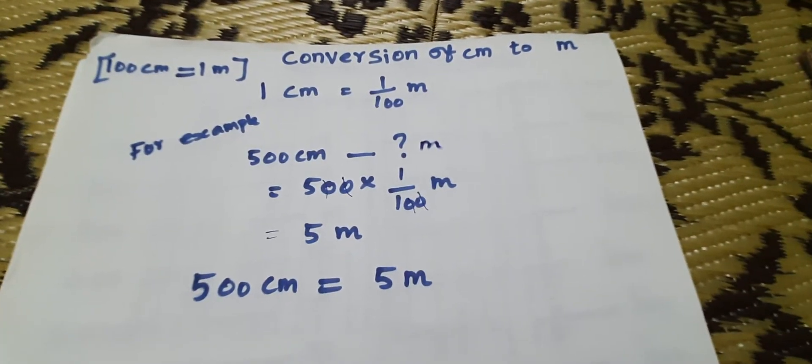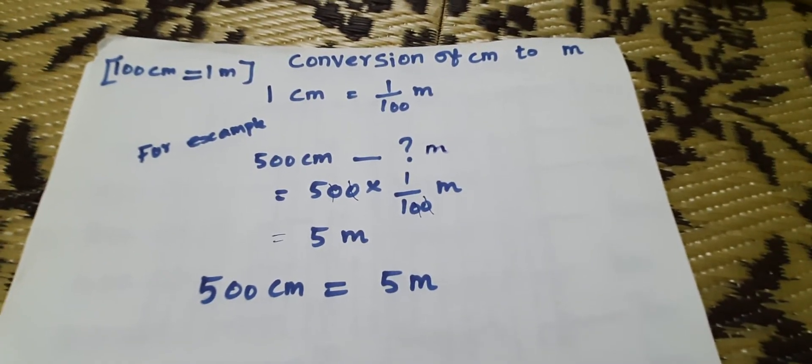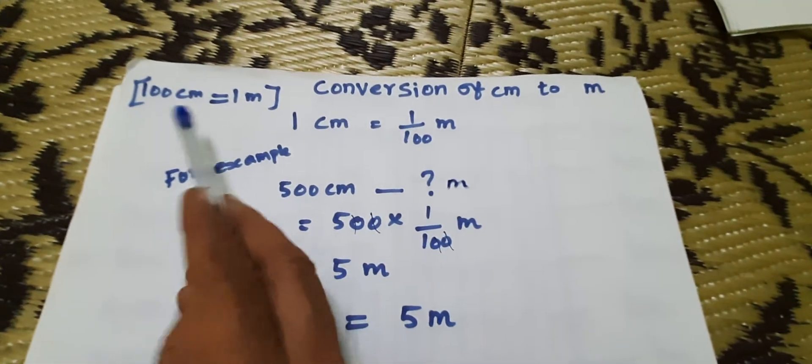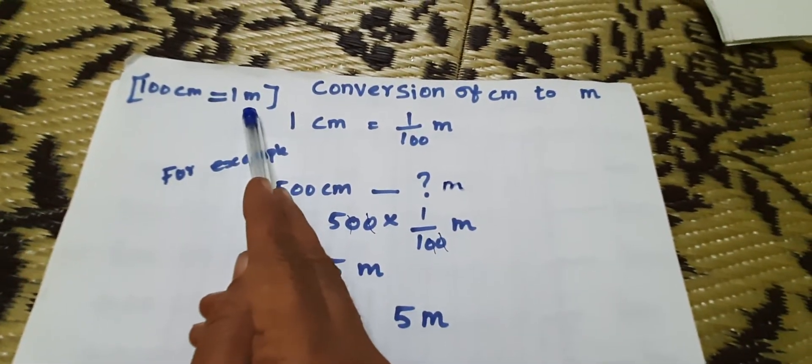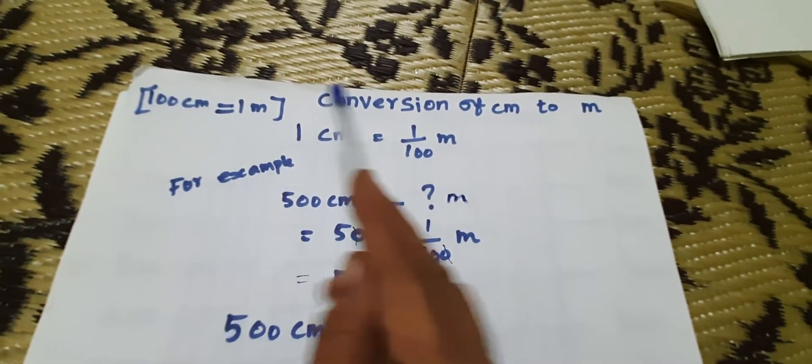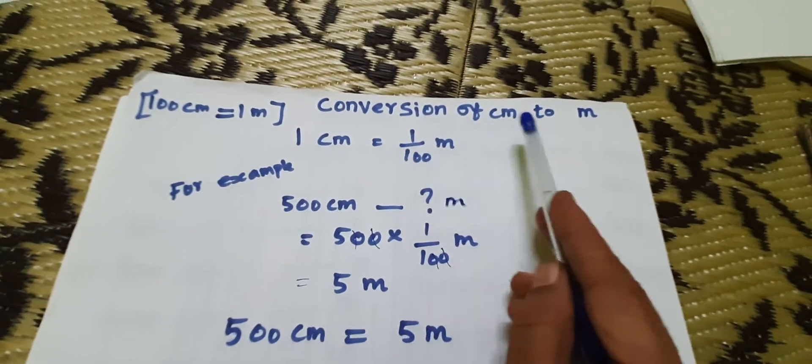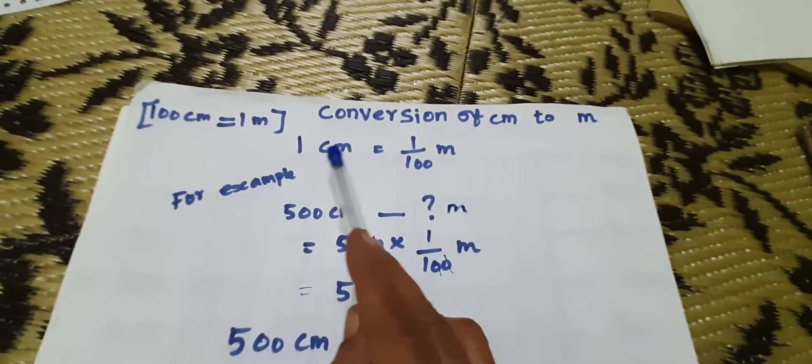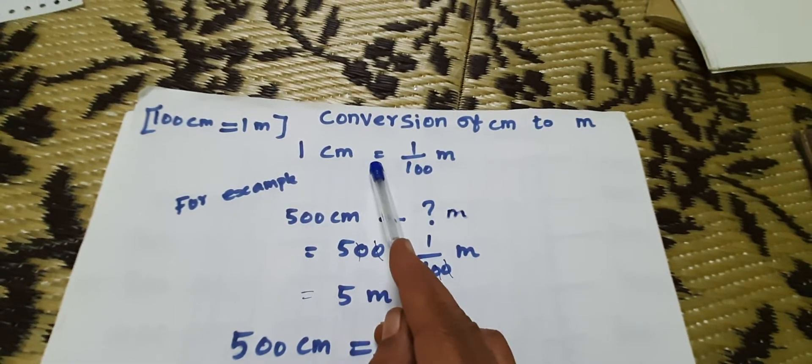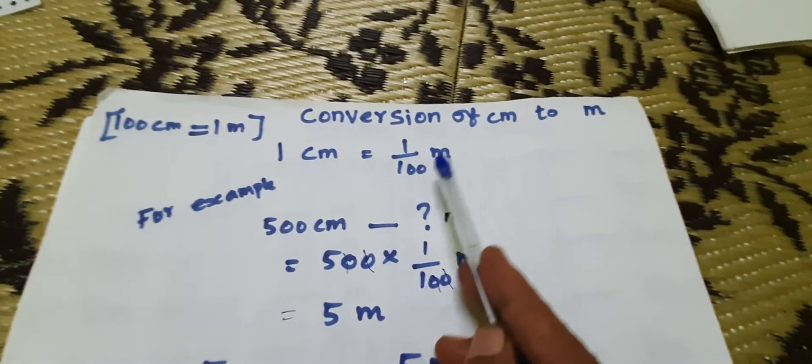How to convert centimeter to meter? 100 centimeter equal to one meter. Formula for conversion of centimeter to meter is one centimeter equal to one by hundred meter.